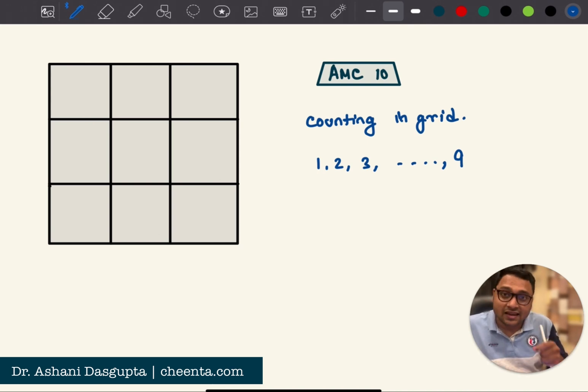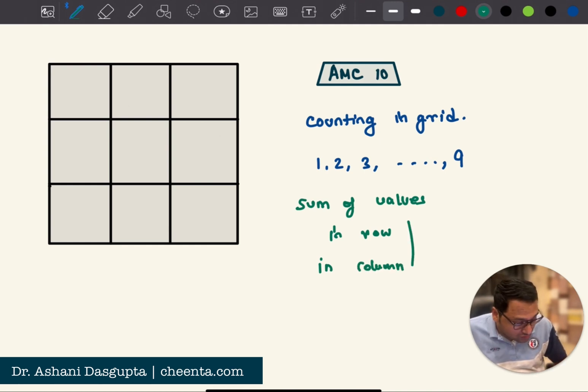You have to use all 9 numbers. And of course, a particular box cannot contain more than one number. The question is that you want the sum of values in a row and in a column, you want that to be odd. So you add the values in a particular row or a column, you add the values and you want that sum to be odd number.